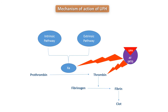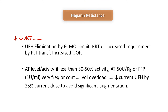If you have heparin resistance, the most essential and common cause is antithrombin deficiency. Without adequate AT, whatever dose of heparin you give will have no effect on anticoagulation. If a patient needs very high heparin doses and ACT is still not rising, this means either heparin is being eliminated by the ECMO or CRRT circuit, there is increased requirement due to platelet transfusion or increased urine output, or AT activity is less than 30 to 50 percent — requiring antithrombin replacement.